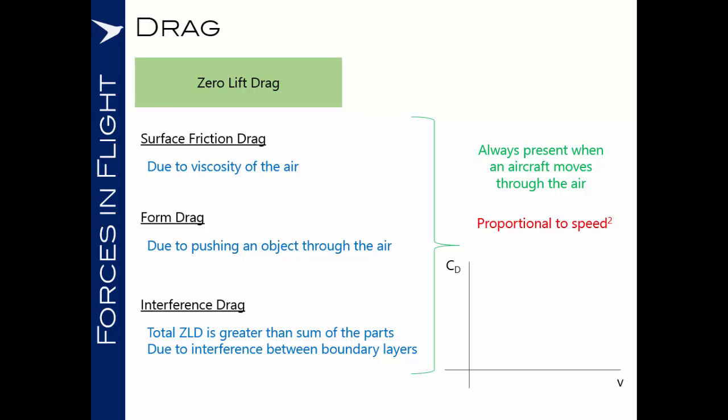This means if we plot a graph of the coefficient of drag, the total amount of drag, versus air speed, we'll see that it rises exponentially as we increase our speed. So for a doubling of speed, we'll see a quadrupling of the zero lift drag.